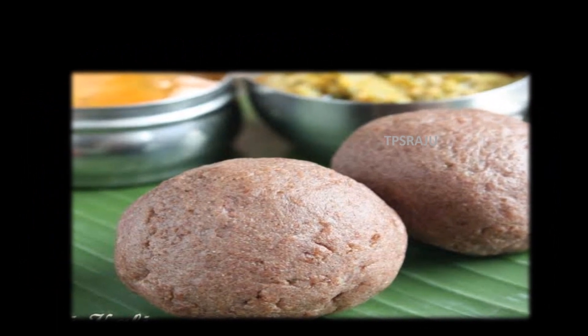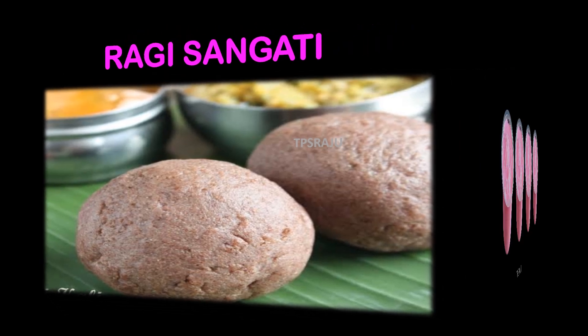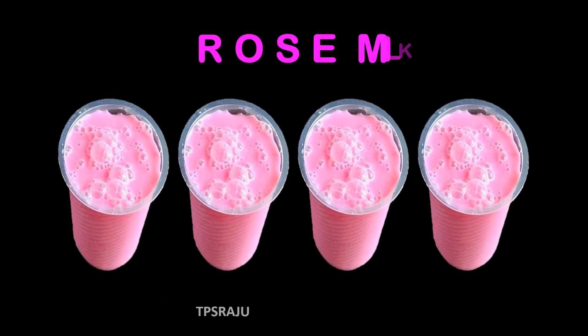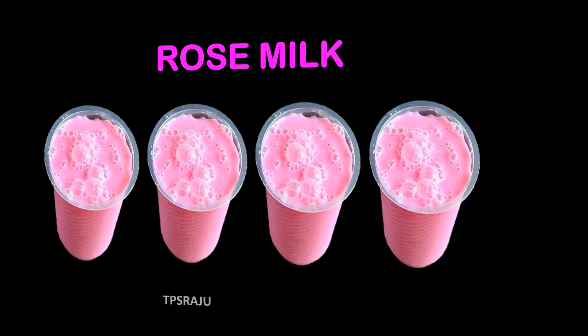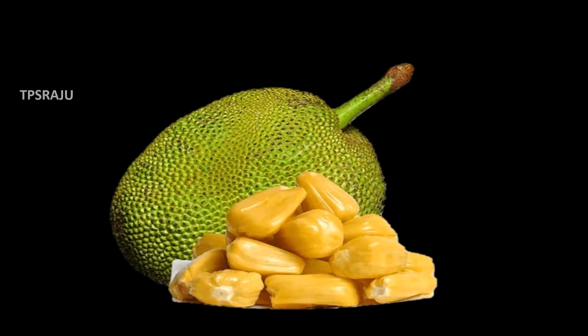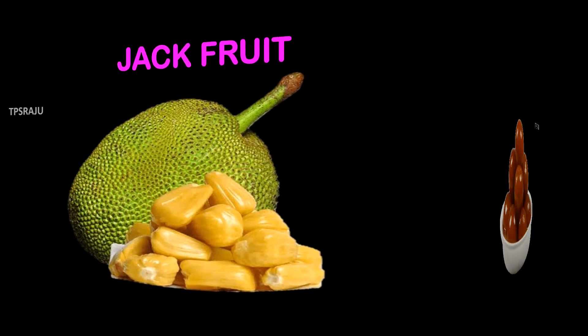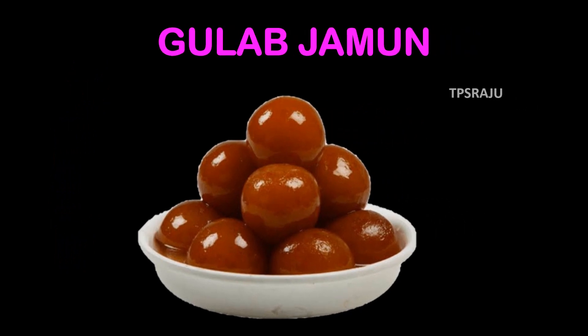This is? Radhisangati. This is? Rose milk. And this is? What is this fruit? Jaw fruit. These are? Gulab jamun.